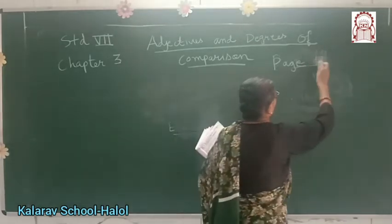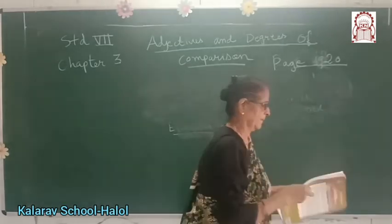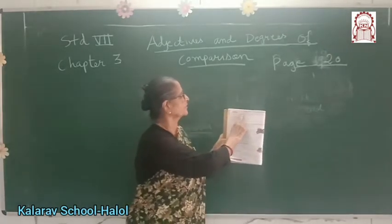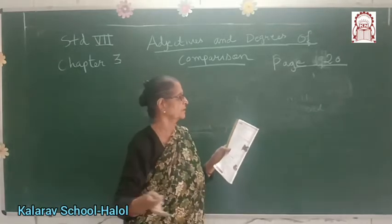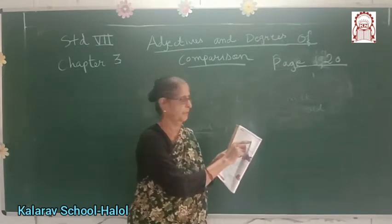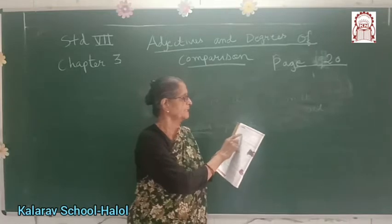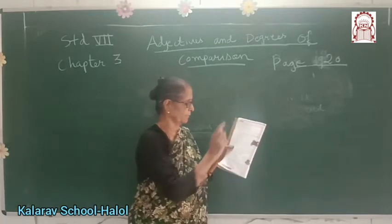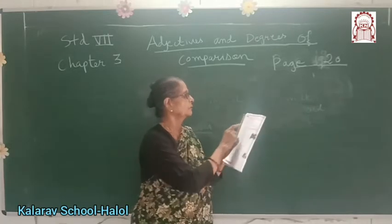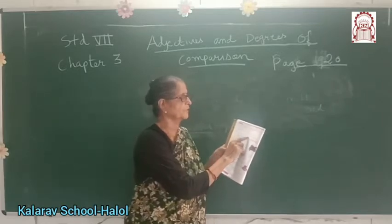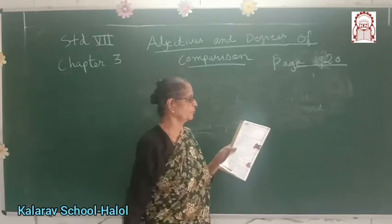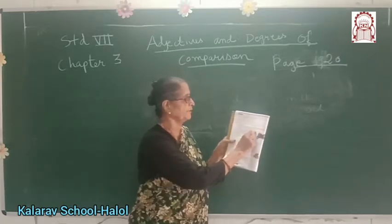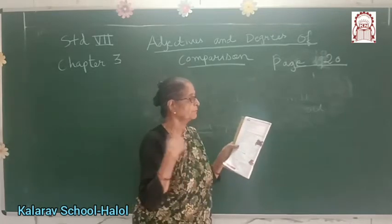Now turn to page number 20. Some adjectives like some, sufficient, and few can be used for both countable and uncountable nouns. For example: some food has been kept aside for the poor — some is used with an uncountable noun. Some students have arrived late. Now, fill in the blanks with adjectives from the box and mention their kinds. The first one has been done for you: I want some sugar for making the cake — some sugar, quantity.